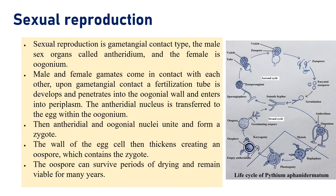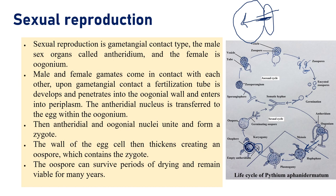Sexual reproduction is by gametangial contact type. Male gametes are called antheridium and female gametes are called oogonium. They come in contact and a small tube called the fertilization tube is formed. Through this tube, exchange of gametes takes place — male gametes move to female gametes. After fertilization, the oospore or fertilized egg is formed. The antheridium becomes empty once the nuclear content has moved to the oogonium. The oospore produces a thick wall around itself and can germinate directly under favorable conditions or survive in soil as a resting spore.